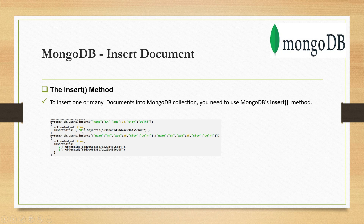Similarly, if you insert more than one document — as shown in the screenshot in the second case — I am trying to insert two documents. It again returns acknowledged true and inserted IDs. All the object IDs are 12-byte unique identifiers. When you look at inserted IDs they are shown in increasing order: zero, one, and if you insert a third then two, and so on, each with a unique object ID.